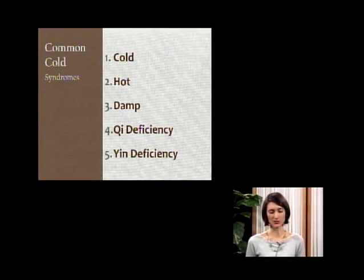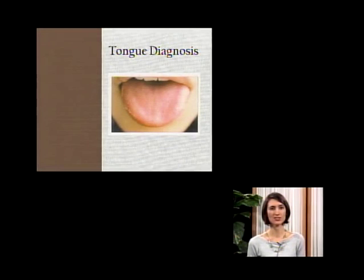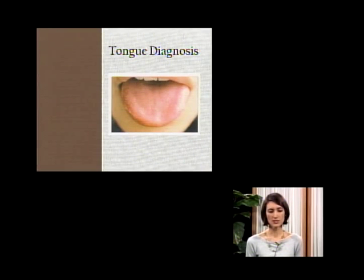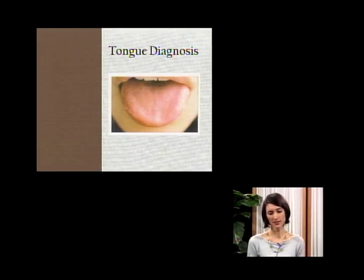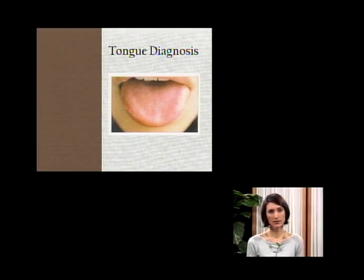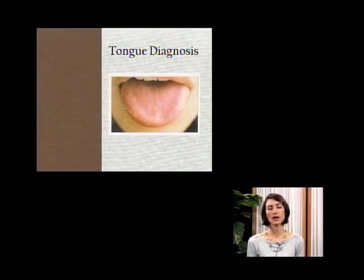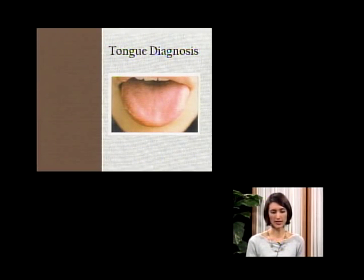Now let's talk about tongue diagnosis. This is a picture of a healthy tongue. The tongue is normally light pink, it has a thin white coating, and it does not have any other abnormal signs. This tongue and coating are going to be used as our reference for a normal tongue during the next few slides. The different things we look at are the color of the tongue, the size of the tongue, the coating — how thick or thin it is and what color it is — and additional signs like purple patches, red dots, or scalloped edges.